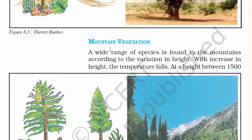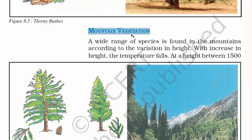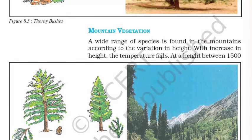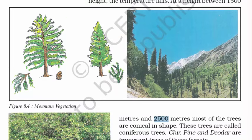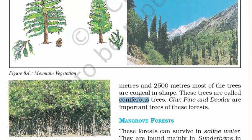The next type is mountain vegetation. By the name it is evident that we are talking about plants, shrubs and trees that live in mountains. A wide range of species is found in mountains according to variation in height. With increase in height, temperature falls. At heights between 1,500 and 2,500 metres, most trees are conical in shape — called coniferous trees. Chir, pine and deodar are important trees of these forests.